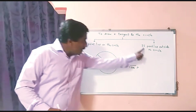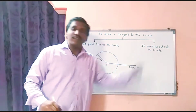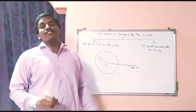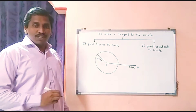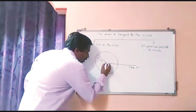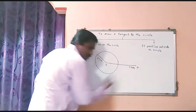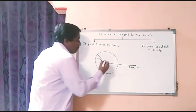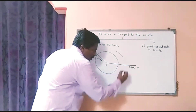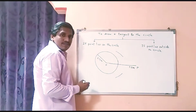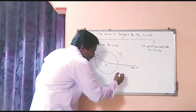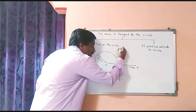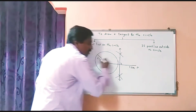Now, if the point lies outside the circle, we will see how to draw a tangent through this point which is in the exterior of the circle. First, we will draw a segment joining the center and that point. After that, we will bisect it — draw a perpendicular bisector, meaning more than half. We will draw an arc and then an intersecting arc. This line is the perpendicular bisector of segment OP.